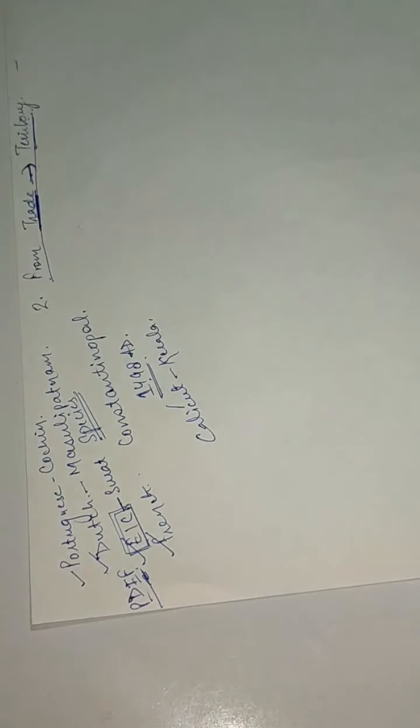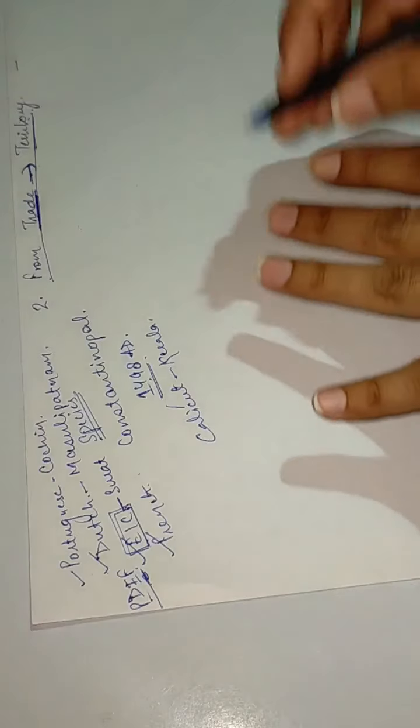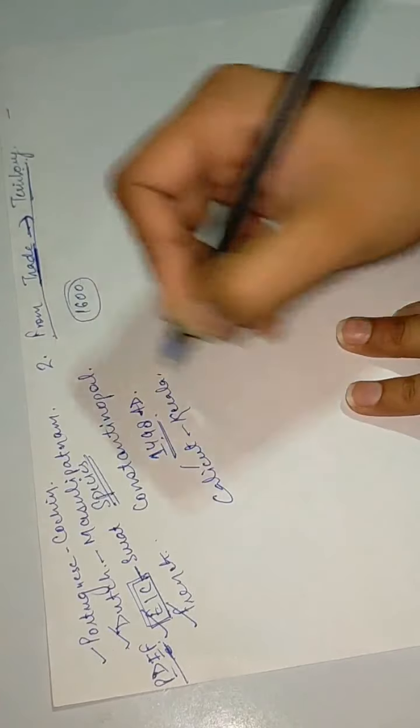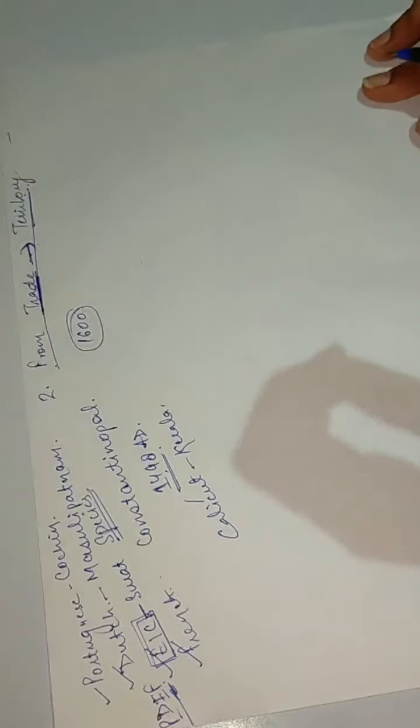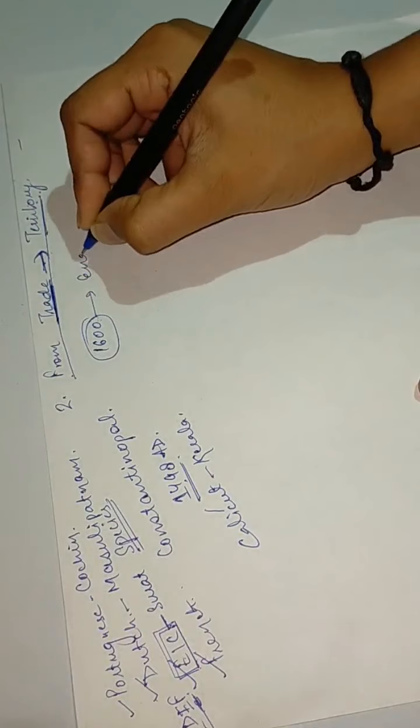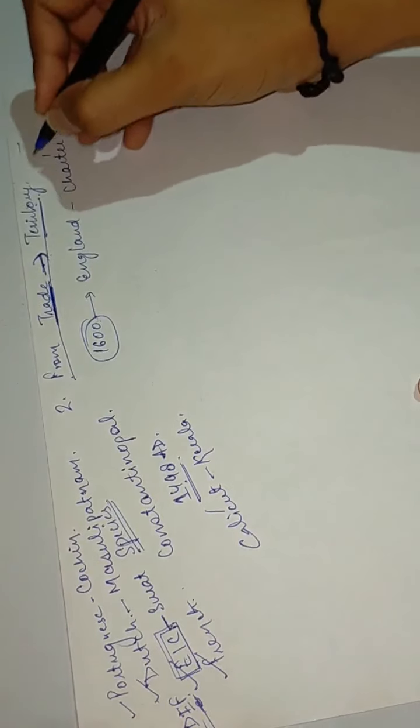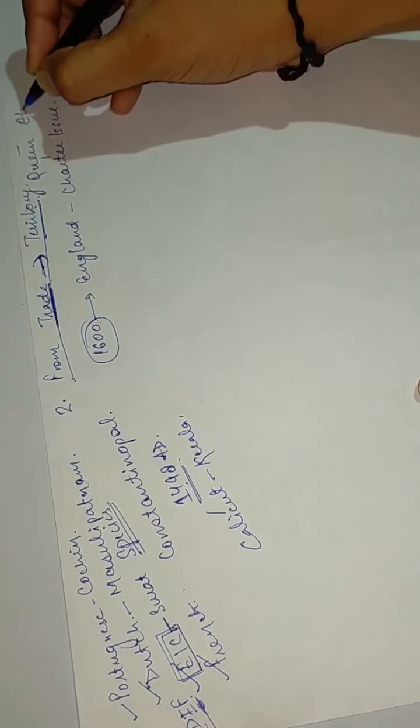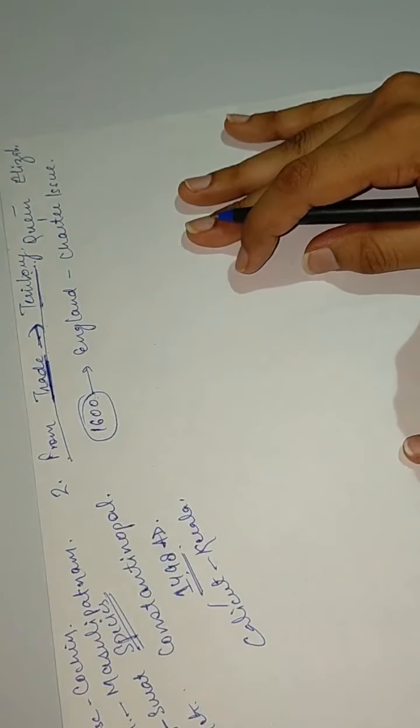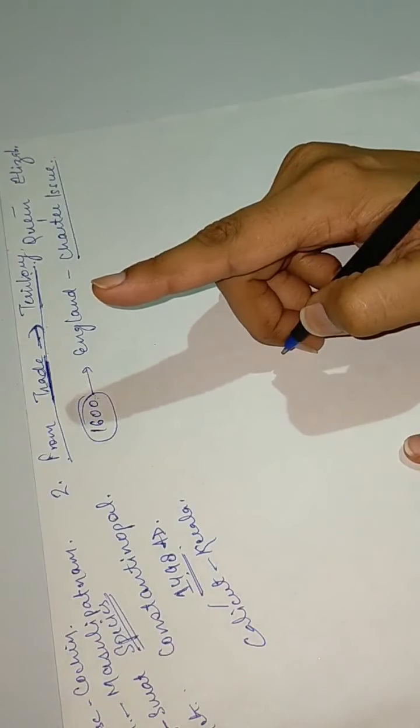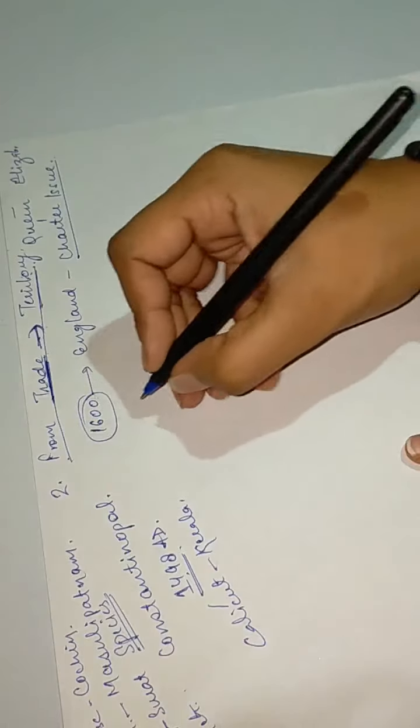In 1600 or 1605, in England, a charter was issued. This charter was issued by Queen Elizabeth. Queen Elizabeth issued them a charter according to which no other company could come to this side to trade. Only East India Company would be the company.